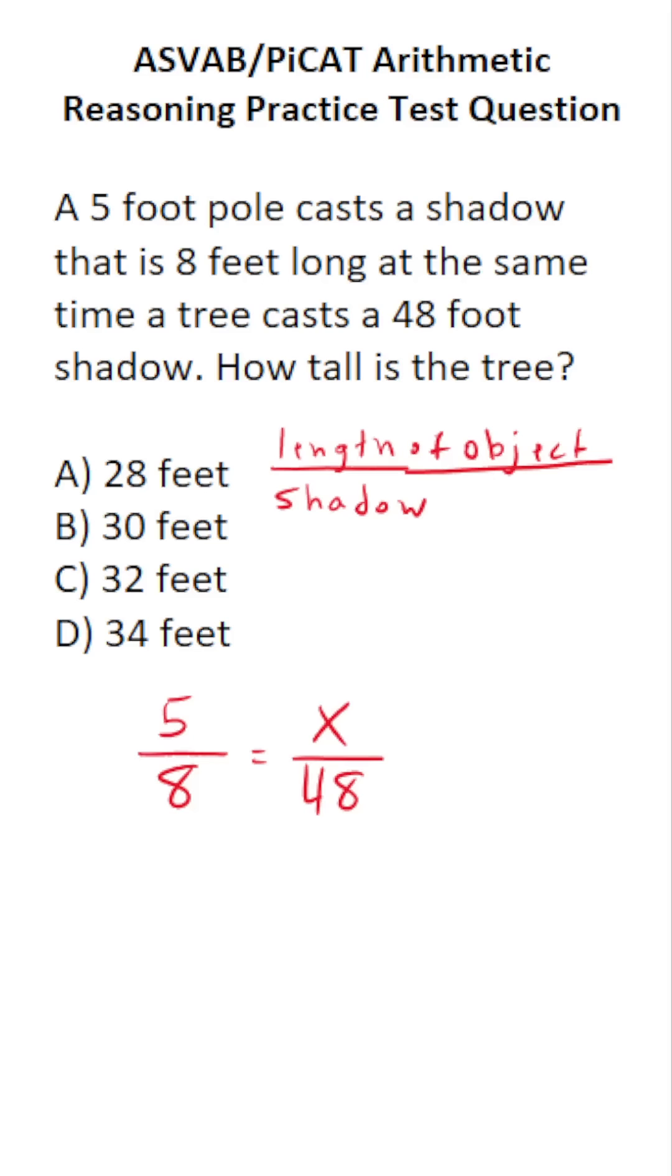You solve proportions via cross multiplication. This becomes 8 times X, or 8X, equals 5 times 48. And so as not to make any mistakes here, I'm going to do 48 times 5 off to the side.